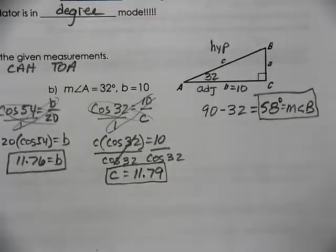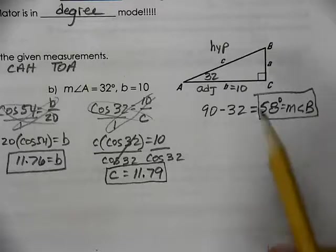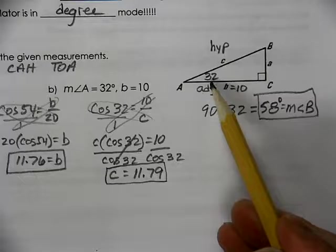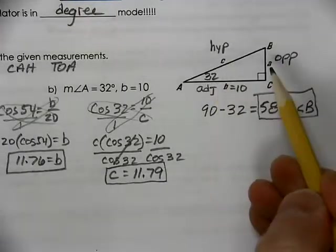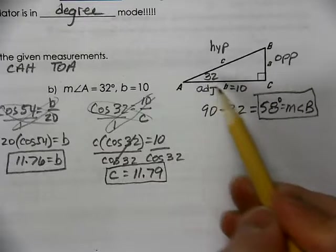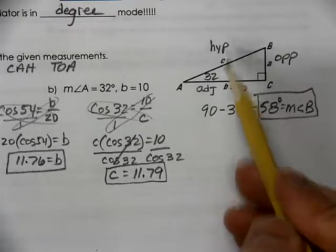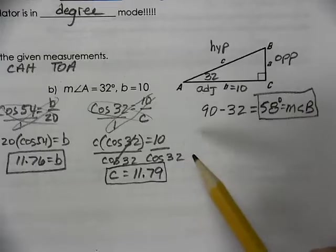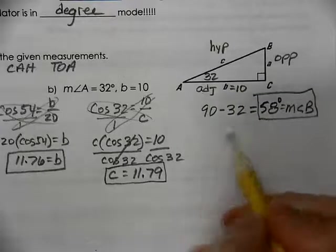So now we have all three angles and two of the sides. What's the side that we're now missing? Side A. So to find side A, side A is across from 32. Side A is the opposite side. So we're going to use opposite and adjacent. I suggest to use the numbers that they give you. Don't use a calculated value if you can help it. Because that helps you be sure that you're not making a mistake now if you made a mistake earlier.